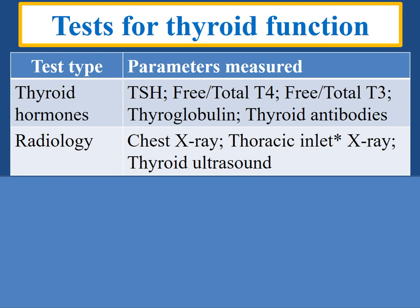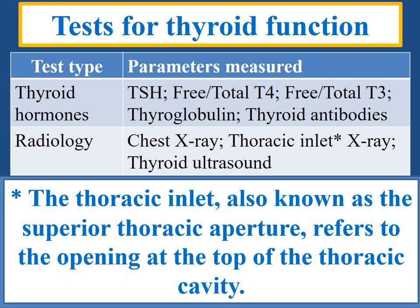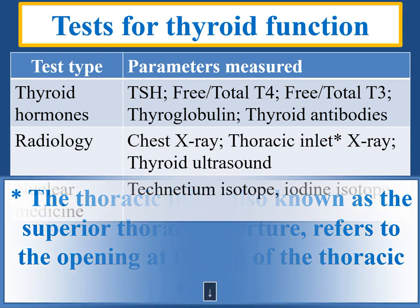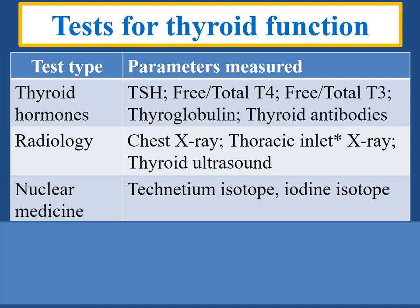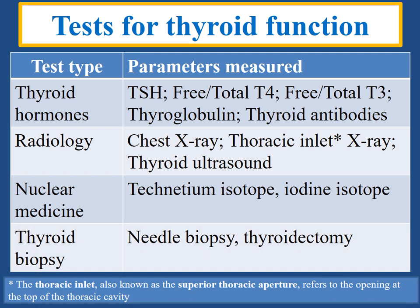Radiological studies include chest X-ray, thoracic inlet X-ray, and thyroid ultrasound — the last being very important. The thoracic inlet, also known as the superior thoracic aperture, refers to the opening at the top of the thoracic cavity and may give important information in cases of retrosternal goiter. Nuclear medicine uses technetium isotope and iodine isotope in diagnosis. Thyroid biopsy — needle biopsy or, in some cases, after thyroidectomy, resection of thyroid tissue for histological study — is also employed.